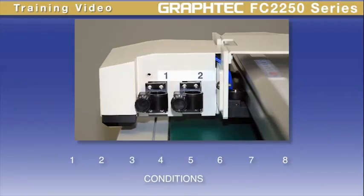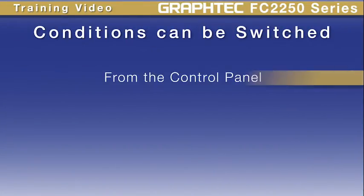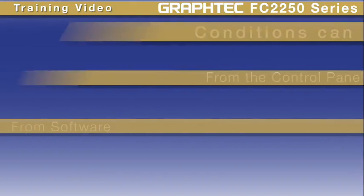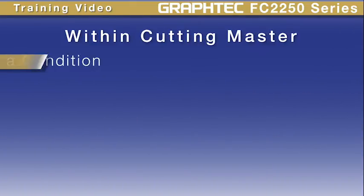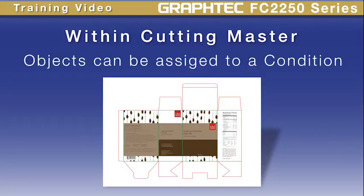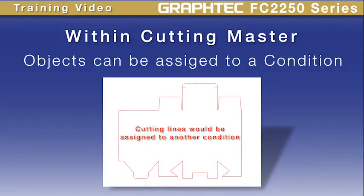Each condition is either assigned to tool holder 1 or tool holder 2. Once the conditions are configured, they can be easily switched either manually from the control panel or by the software application. Within the software, individual objects in a design can be assigned to different conditions. For instance, a package design with both creasing and cutting could have the lines for creasing assigned to the condition configured for creasing, and the lines for cutting assigned to a cutting condition.